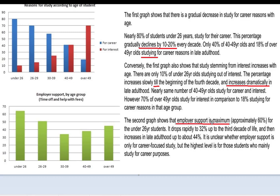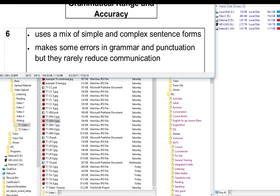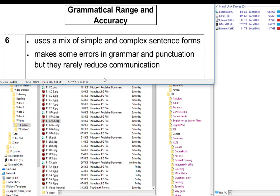There is a word missing: 'at.' Third active life increases in adulthood. So we have pretty standard phrases: decline, increases, drops rapidly. Probably a 6 would be a fair assessment for grammar.